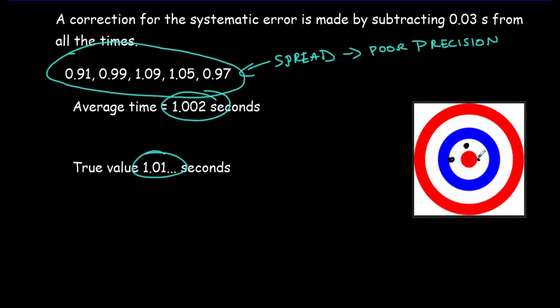So our individual values are still well away from the true value. But they're averaging much closer to that true value.